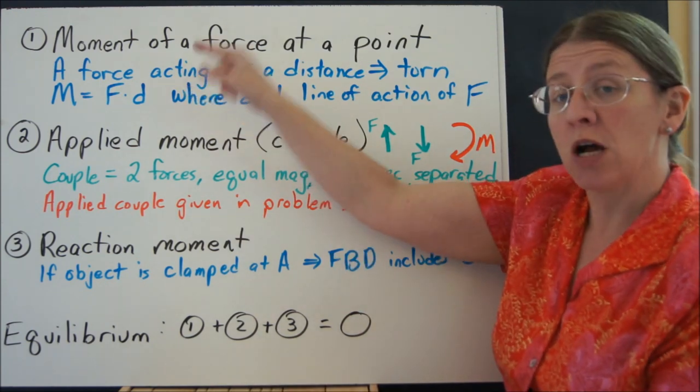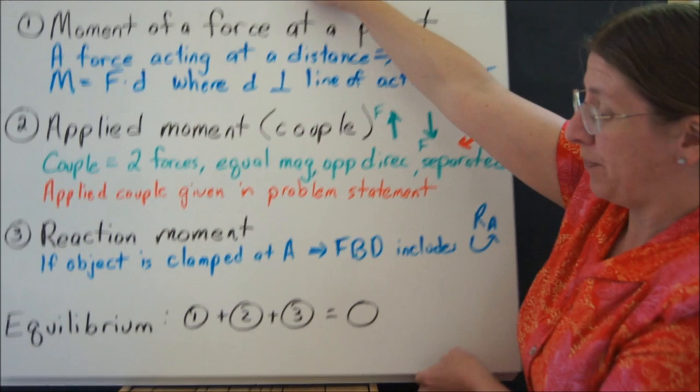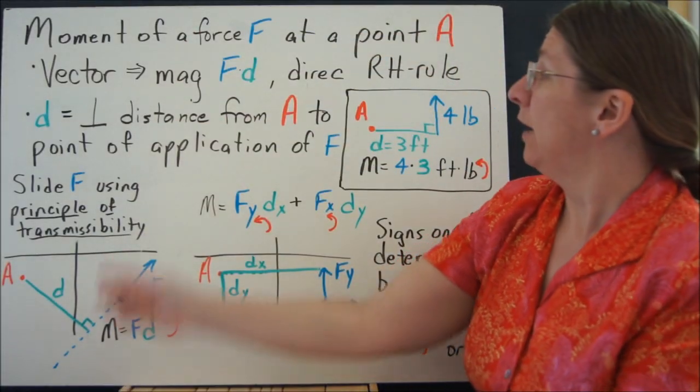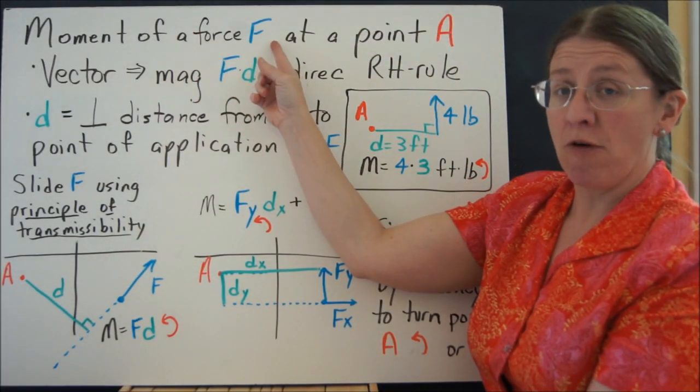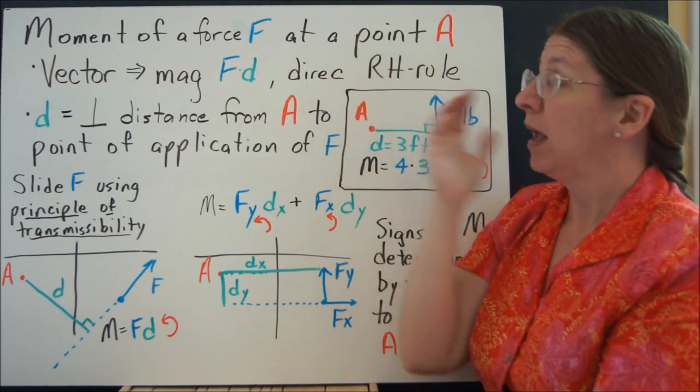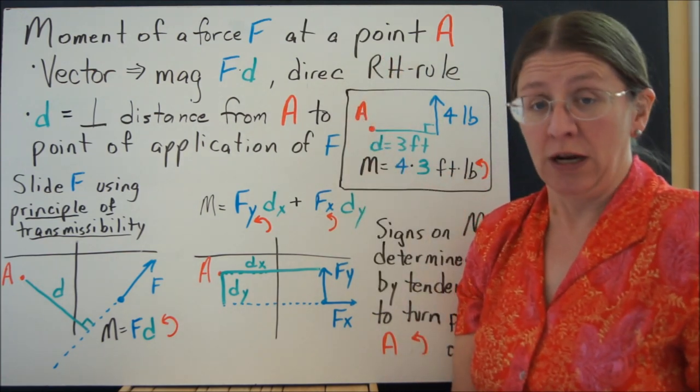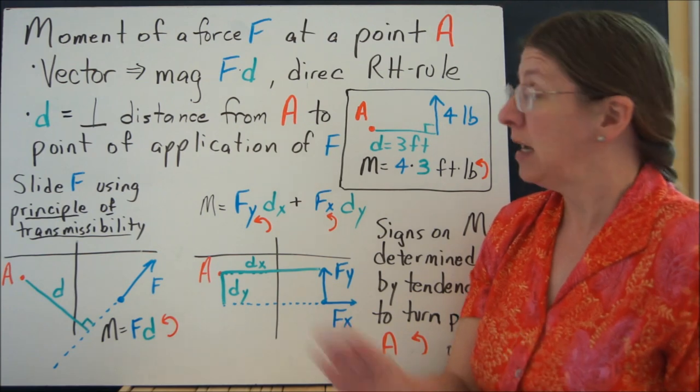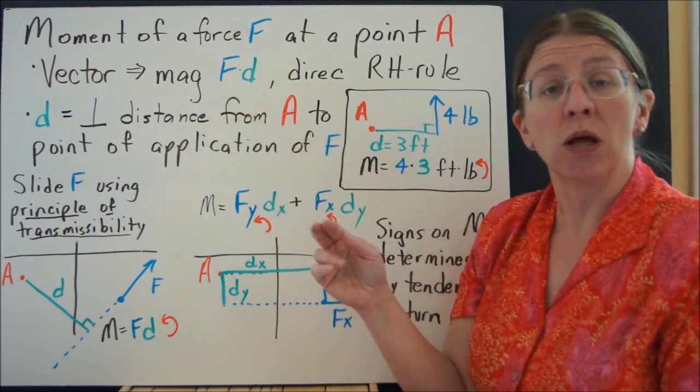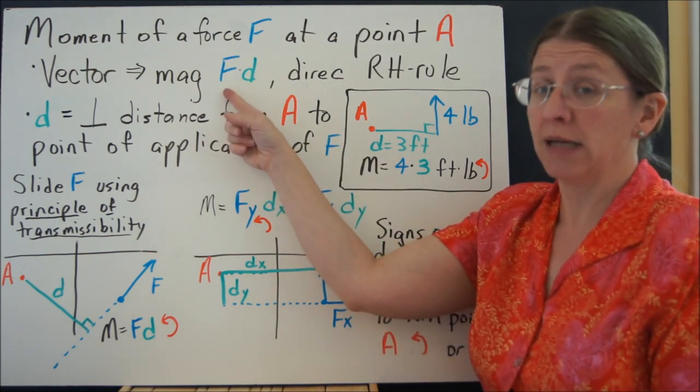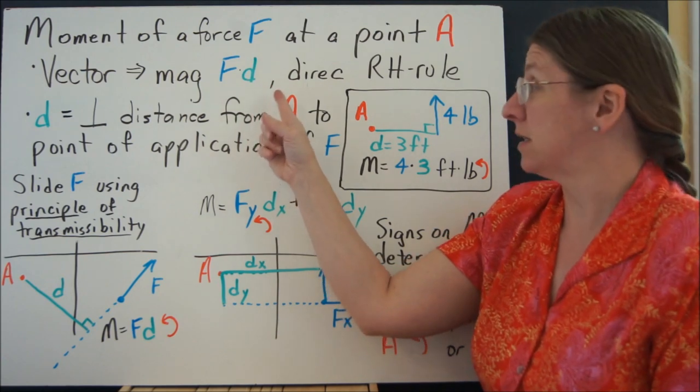Right now what we want to talk about is the moment of a force at a point. So if I'm looking about the moment of a force F at a point A, remember that a moment is a vector. It always has to have magnitude and direction. But the easiest way to do this is what we call the scalar method, where you're just going to take the magnitude of F times the perpendicular distance.